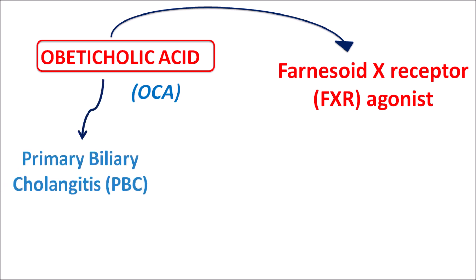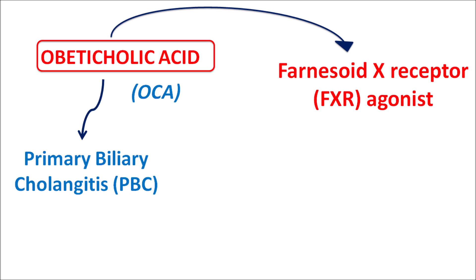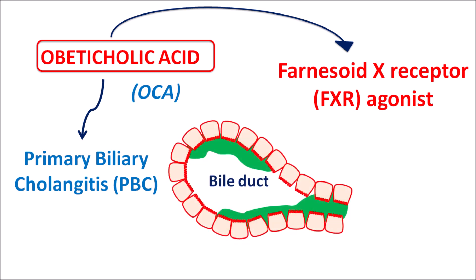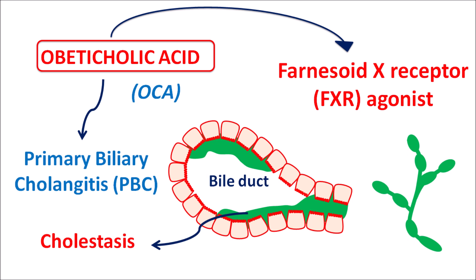OCA can reduce bile acid levels within the hepatocytes, so it can be used in the treatment of primary biliary cholangitis (PBC). PBC is a condition associated with increased formation of gallstones and decreased biliary flow. Within the bile duct, biliary flow is reduced, resulting in cholestasis. This cholestasis stimulates the inflammatory response, causing inflammation of the bile ducts, and finally leads to cirrhosis of the biliary ducts and liver.